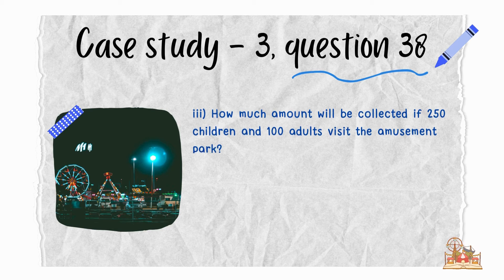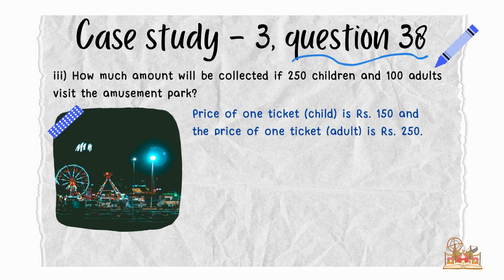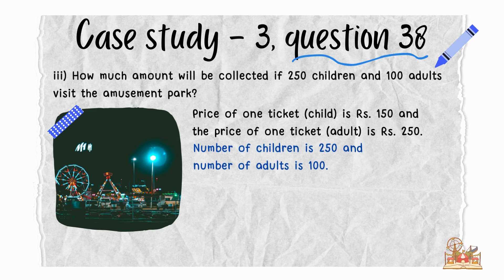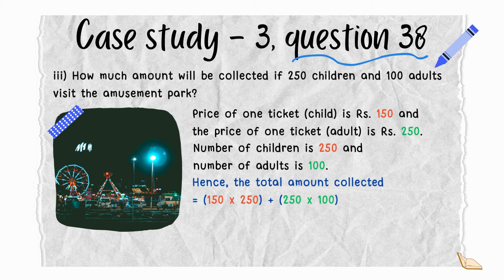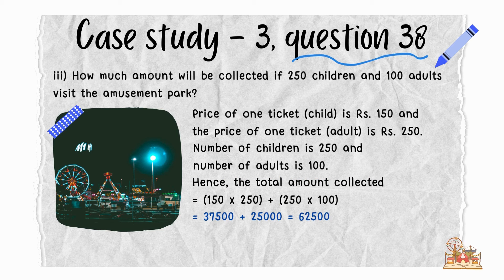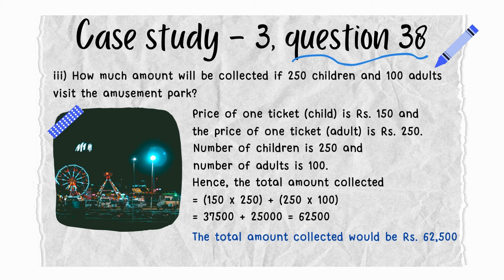How much amount will be collected if 250 children and 100 adults visit the amusement park? The price per child ticket is rupees 150 and per adult ticket is rupees 250. With 250 children and 100 adults, the total amount collected would be 150 × 250 + 250 × 100 = rupees 62,500.